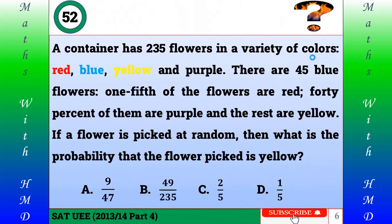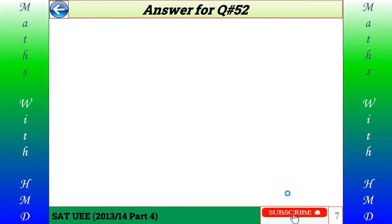Question number 52 says: a container has 235 flowers in a variety of colors — red, blue, yellow, and purple. There are 45 blue flowers, one-fifth of the flowers are red, 40% of them are purple, and the rest are yellow. If a flower is picked at random, what is the probability that the flower picked is yellow? A) 9/47, B) 49/235, C) 2/5, D) 1/5.